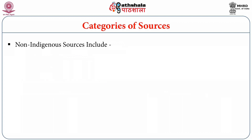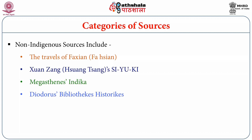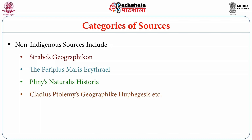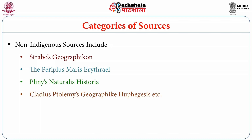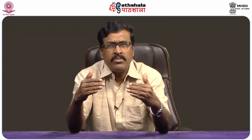The second category is non-indigenous sources. These include the travels of Faxian, Xuanzang's Siyuki, Megasthenes' Indica, Diodorus' Bibliotheca Historica, Strabo's Geographica, the Periplus Maris Erythraei, Pliny's Naturalis Historia, and Claudius Ptolemy's Geography. Non-indigenous sources also include Arabic and Persian sources like Hudud al-Alam, Al-Biruni's Kitab ul-Hind, and Letters of Medieval Jewish Traders by S.D. Goitein. We have thus learned about the many categories of literary sources, both indigenous and non-indigenous.